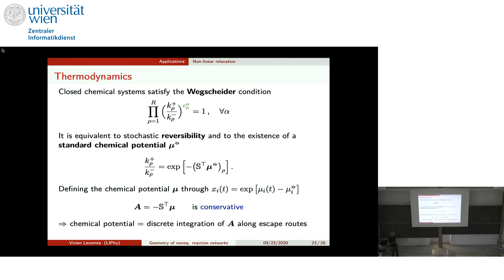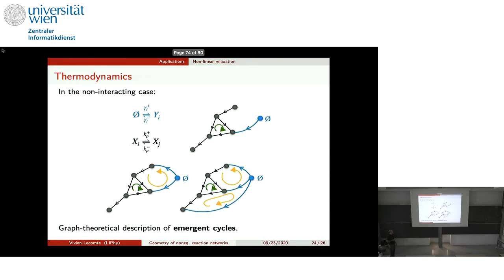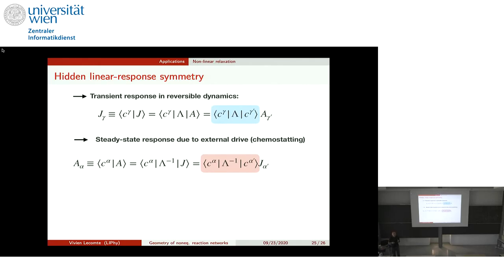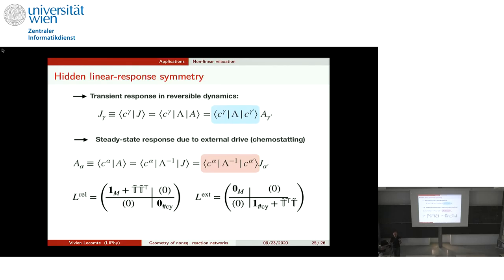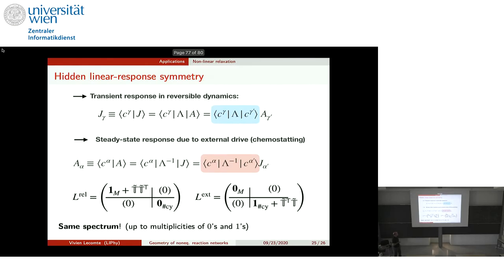The potential described is in fact the chemical potential — details are in our preprint. Another aspect concerns linear response: the same matrix T describes both cycles and co-cycles, and this has an interesting consequence. In the linear response regime, whether considering transient response to a small perturbation at equilibrium or steady-state response to a small applied field, the two response matrices share the same spectrum up to zeros — they are two Onsager matrices with identical spectra.